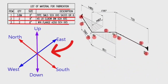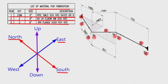Every pipe drawing has such a sketch — this indicates the directions. By studying these directions, we can easily read any pipe isometric. There are six directions here: north direction, south direction, east direction, west direction, up direction, down direction. The man who reads the isometric must think that he is in the middle of these directions, his face towards the north. Let's try to read this pipe isometric using these directions.